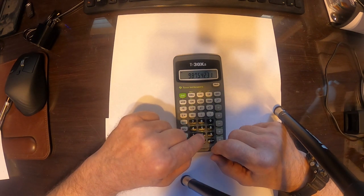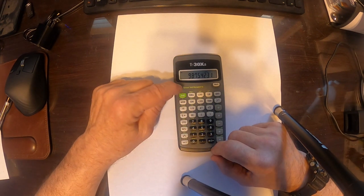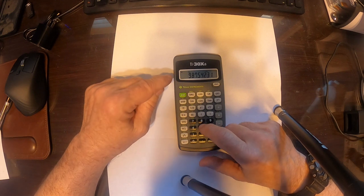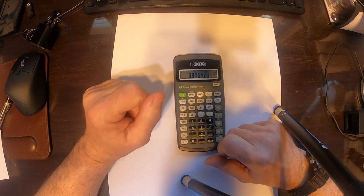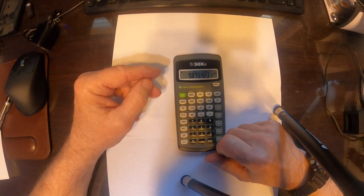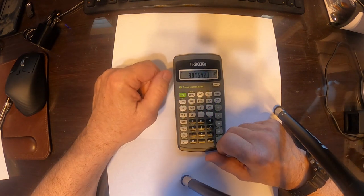See that SCI right there above the 5? It's in green, so press the green 2nd button, and then press SCI. Now, that is in scientific notation. It says 9.8754231 times 10 to the 7th.